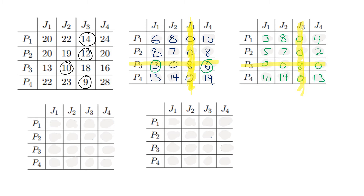So now we move on to the next step: identify the lowest value that is not covered by any line. In this case, looking at the third table, the lowest uncovered value is 2. We need to subtract all the uncovered values by 2. All numbers covered by a line remain the same, except for the value at the intersection where two lines meet — there we add the 2 instead.